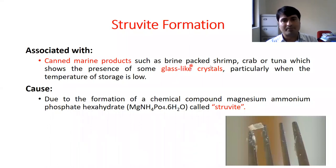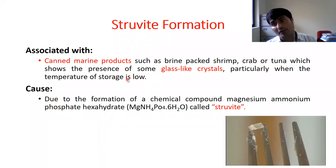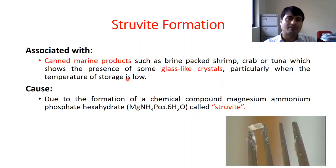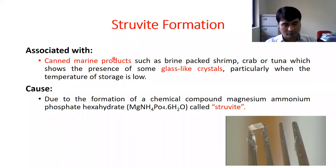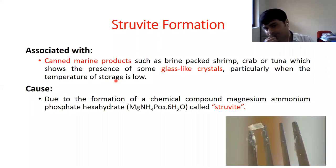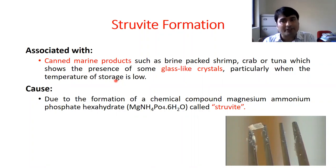In canned marine fish such as brine-packed shrimp and crab, the presence of glass-like crystals occurs particularly when the storage temperature is low. The storage temperature should be controlled — maintaining an ambient room temperature of around 25 to 30 degrees Celsius. That temperature should be maintained to prevent crystal formation.